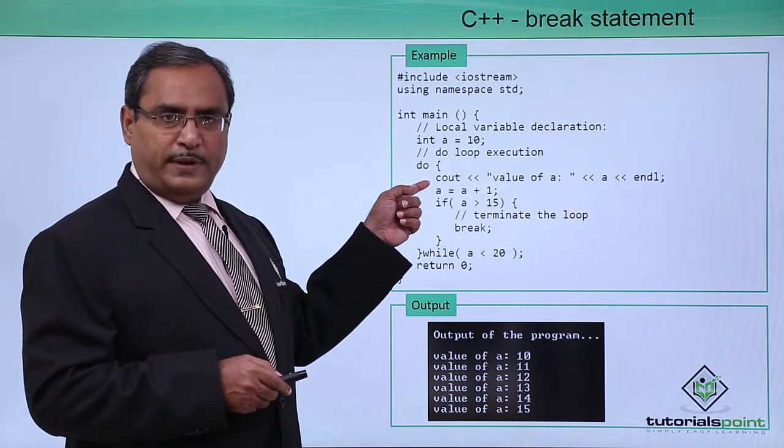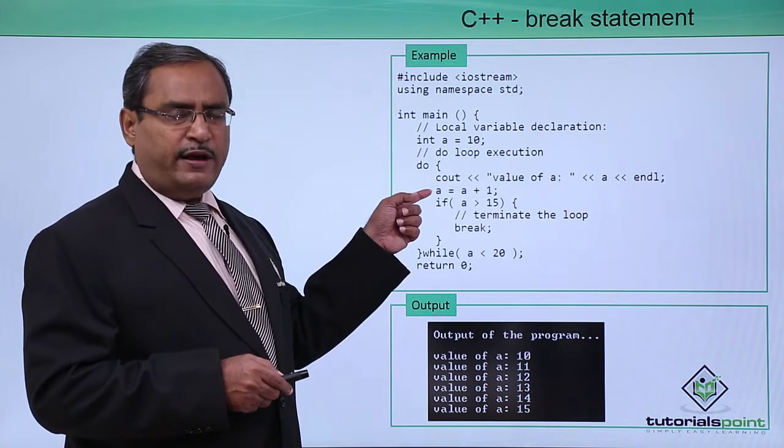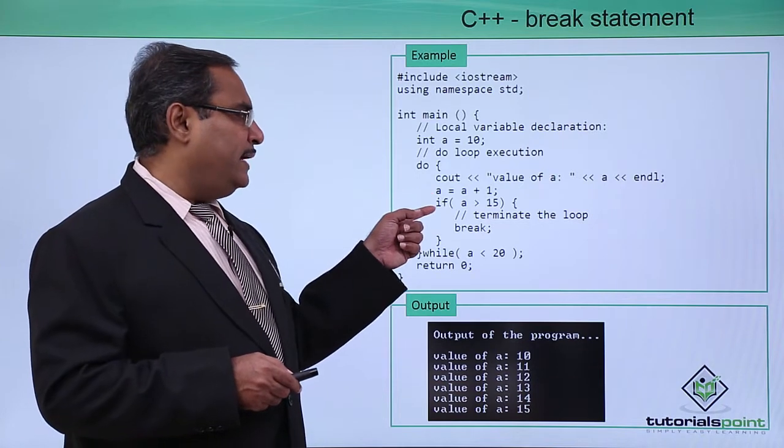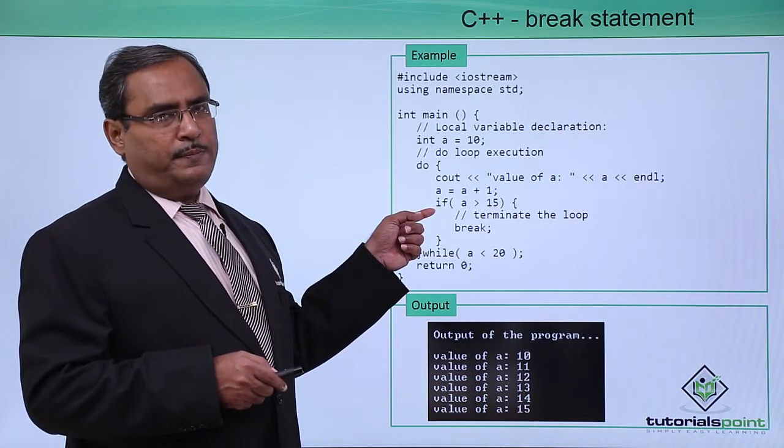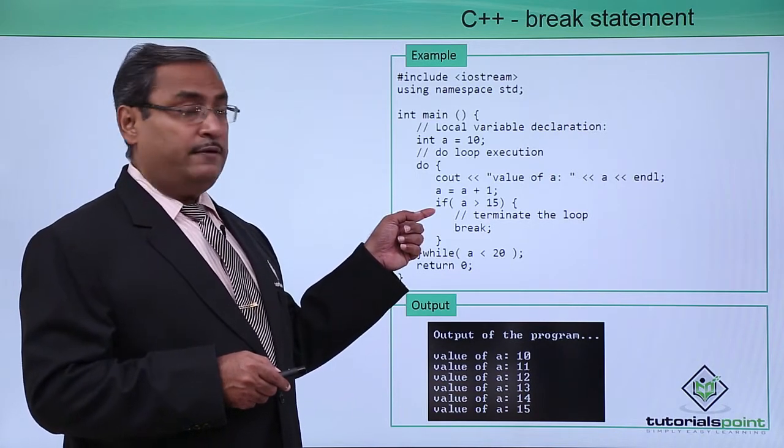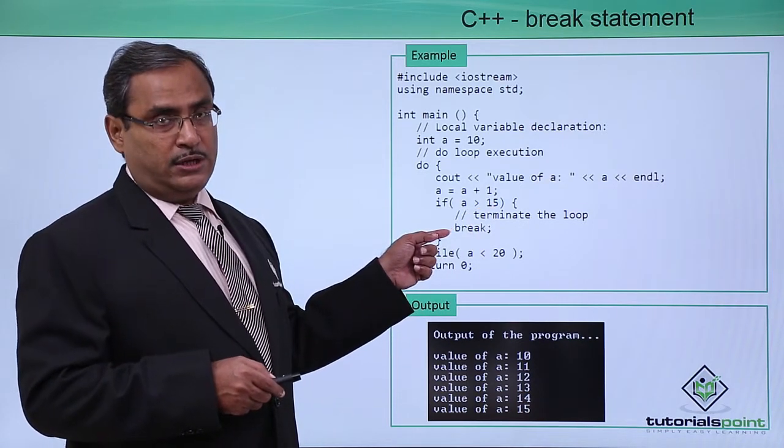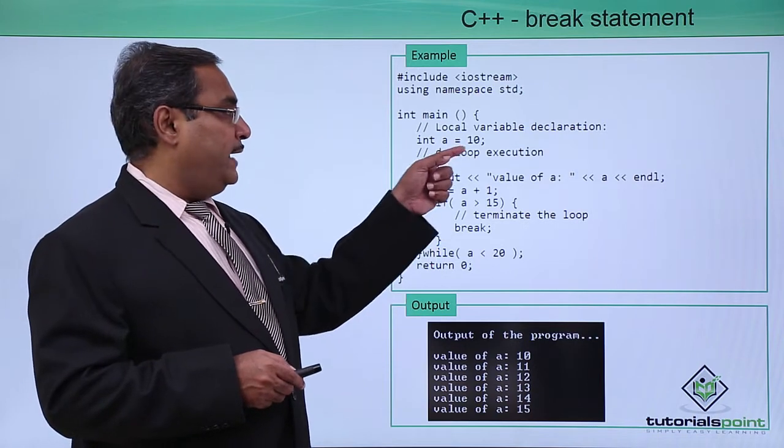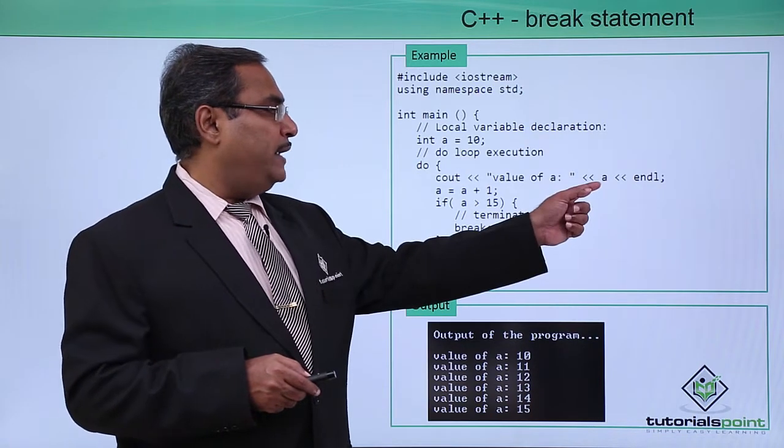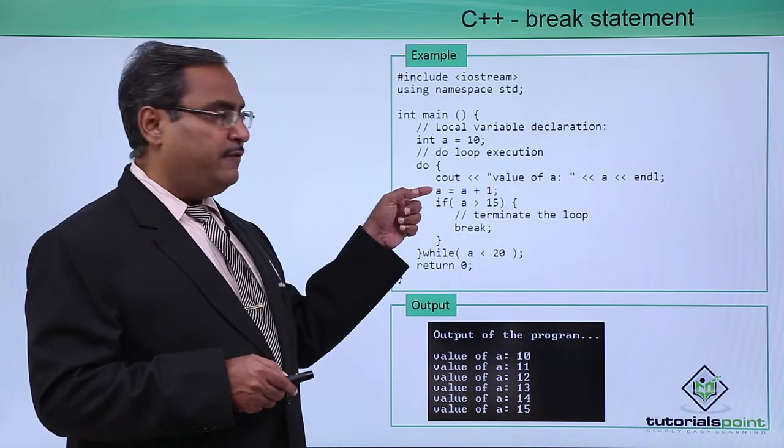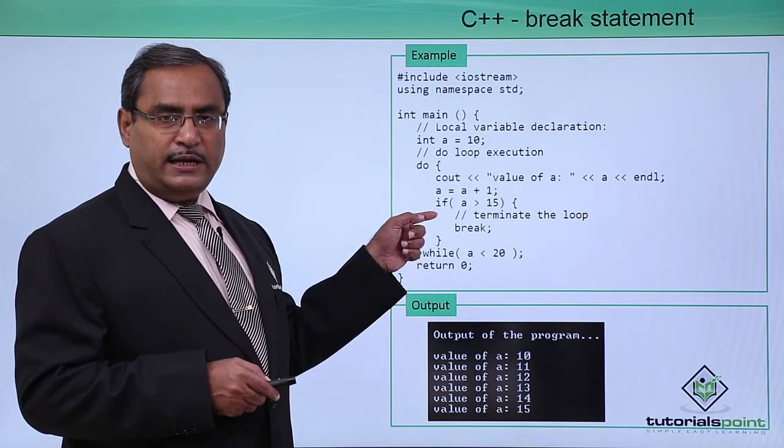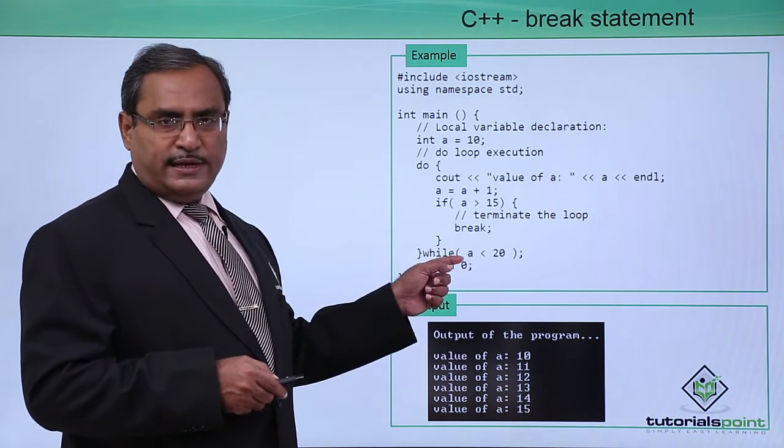We are increasing the value of a by 1 and then we are checking whether the value of a has become greater than 15 or not. If it is greater than 15, then break is taking place. For a equals 10, the value of 10 will get printed, it will become 11. 11 is greater than 15 is false, 11 is less than 20 is true.